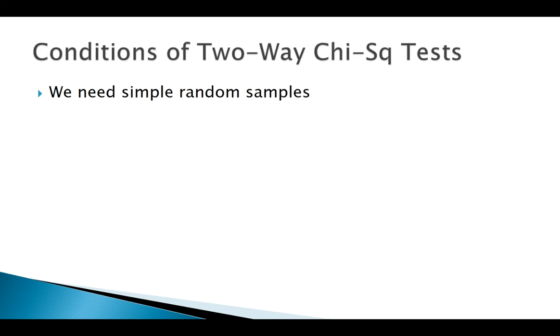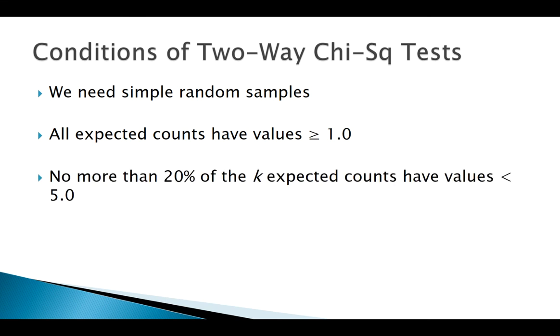Here are our conditions: we always need good sampling techniques, we don't want any expected counts less than one (in other words, zero), and we don't want a whole bunch of small expected counts. These conditions look very similar to our goodness of fit test.